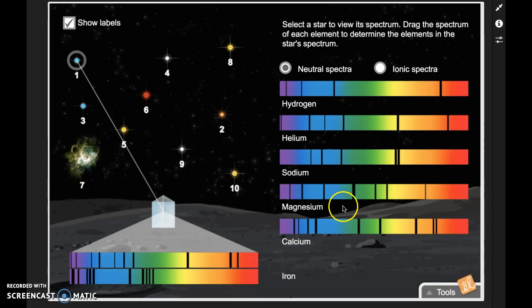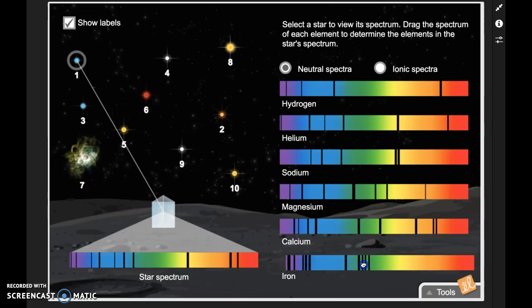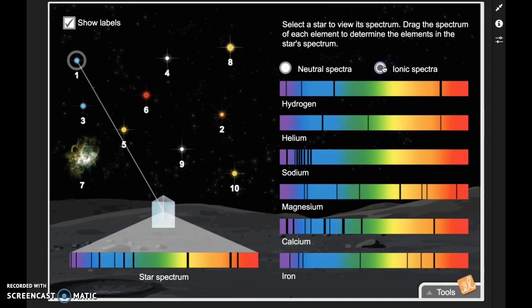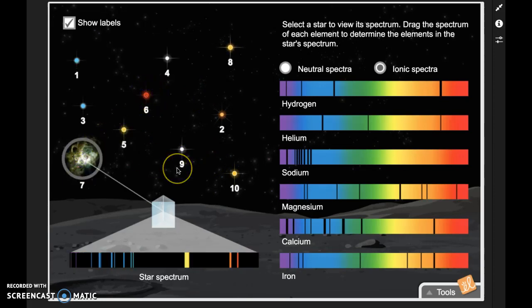Okay, a couple things to remember as I move this off to the side. We have one, two, three, four, five, six sets in our neutral spectra, and we also have some ionic spectra that we can use, and those are also going to be present in these different stars as well. As you get to stars five and six and seven, eight, nine, and ten, there's going to be something a little bit different.